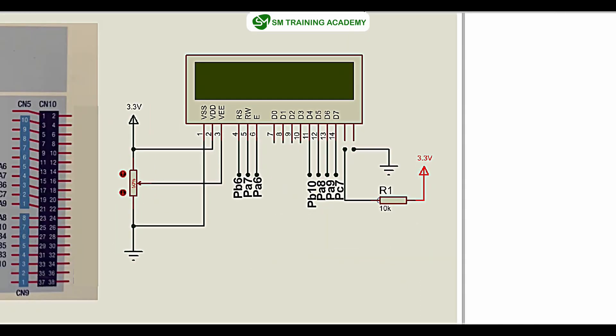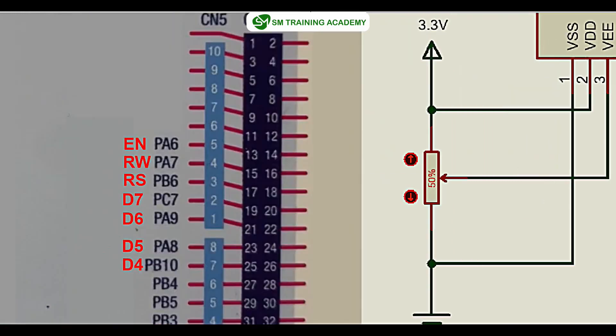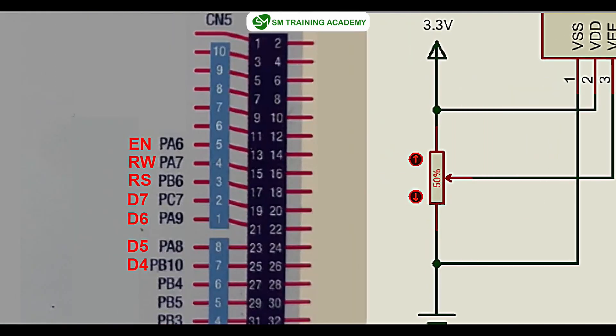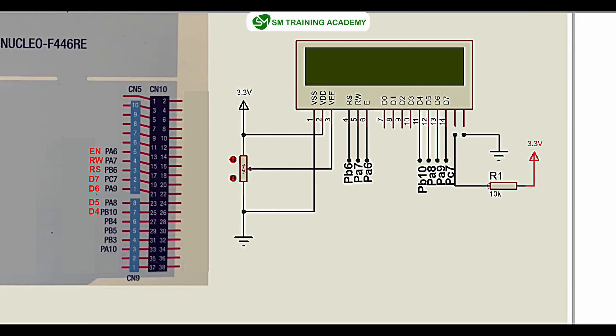The 16th pin (cathode of the backlight) connects to ground. For control pins: RS connects to PB6, RW connects to PA7, and Enable connects to PA6 of the microcontroller. For data lines, we are neglecting the LSB lines D0 to D3 and only utilizing D4 to D7 — the MSB data lines. D4 connects to PB10, D5 to PA8, D6 to PA9, and D7 to PC7.